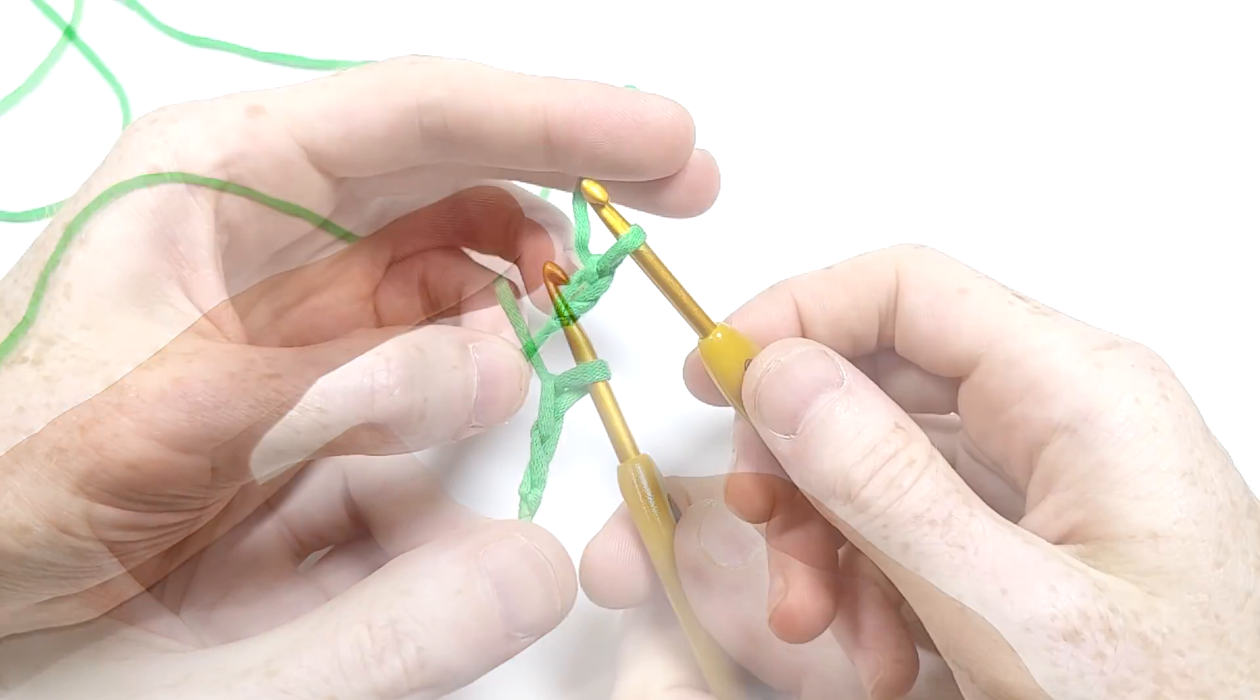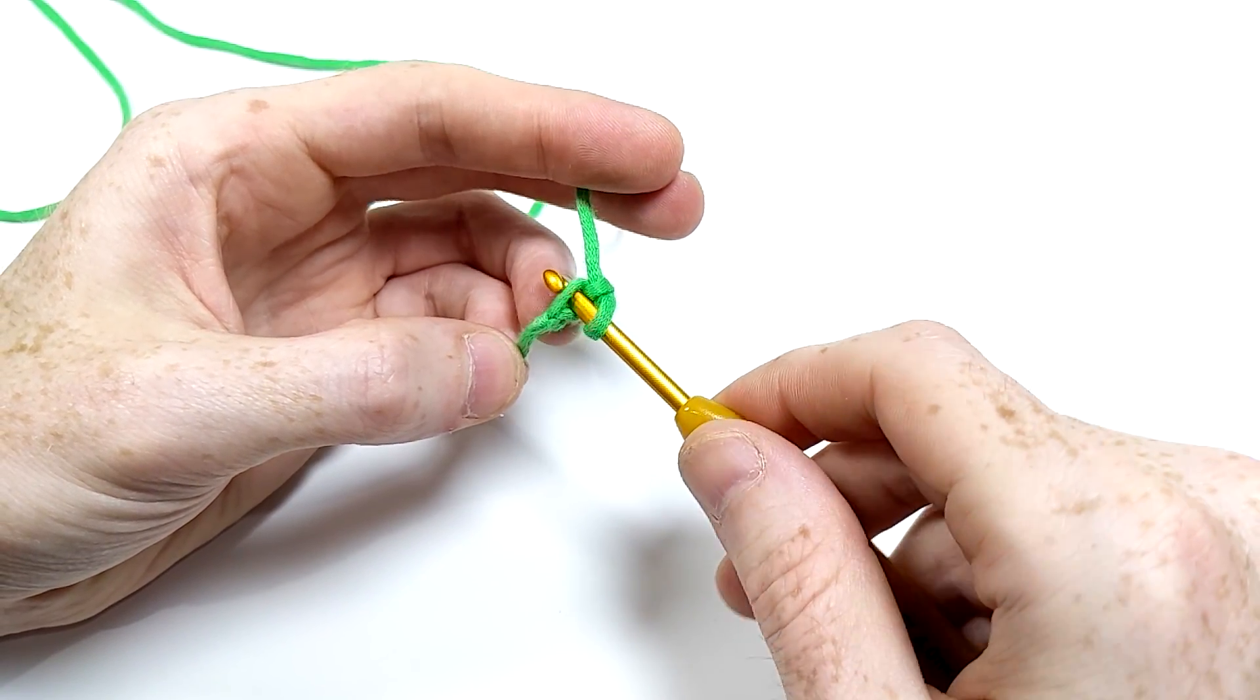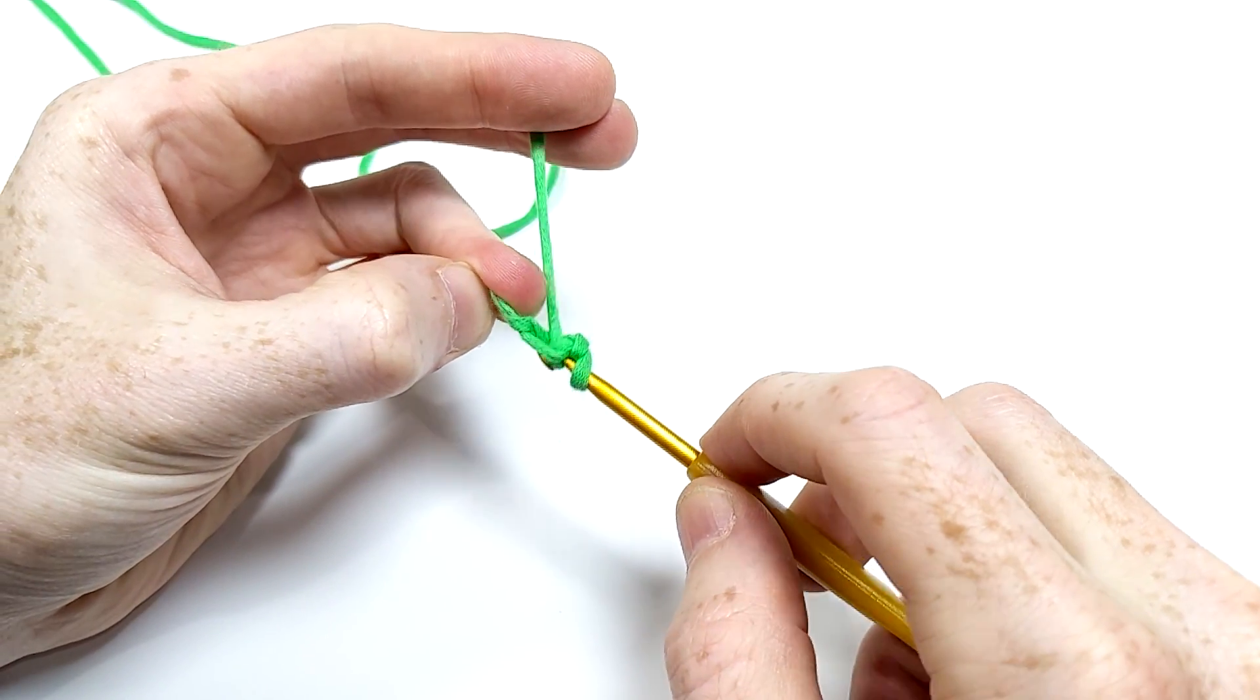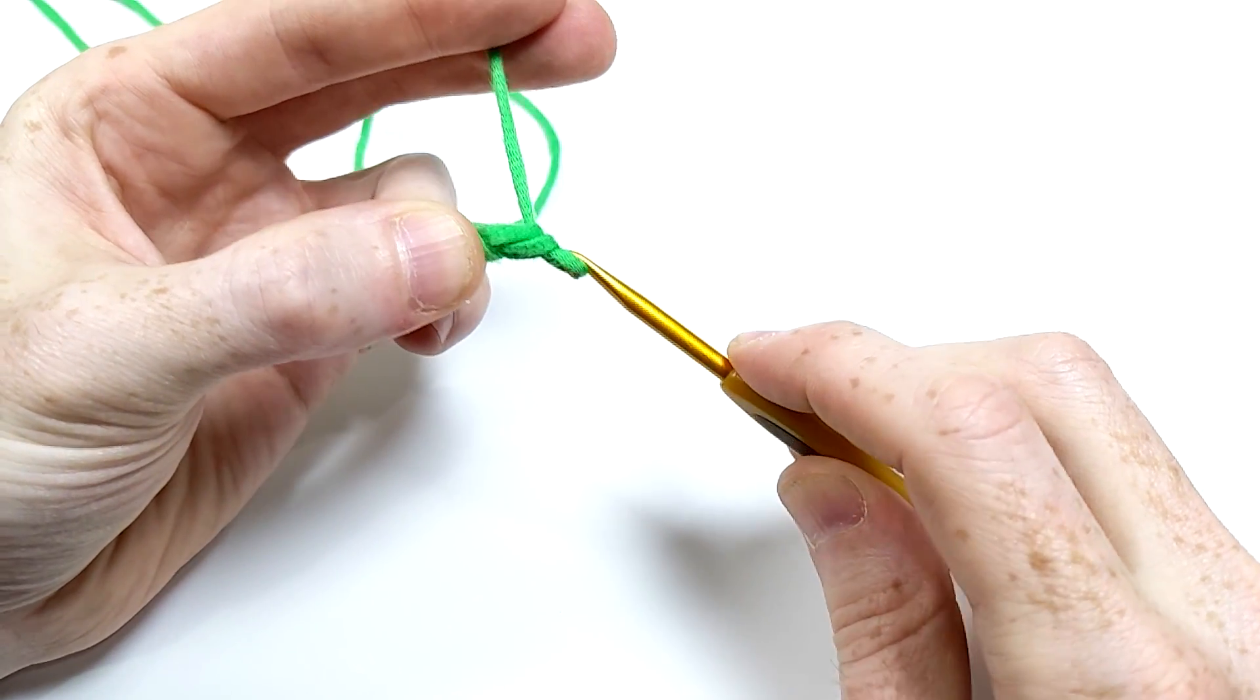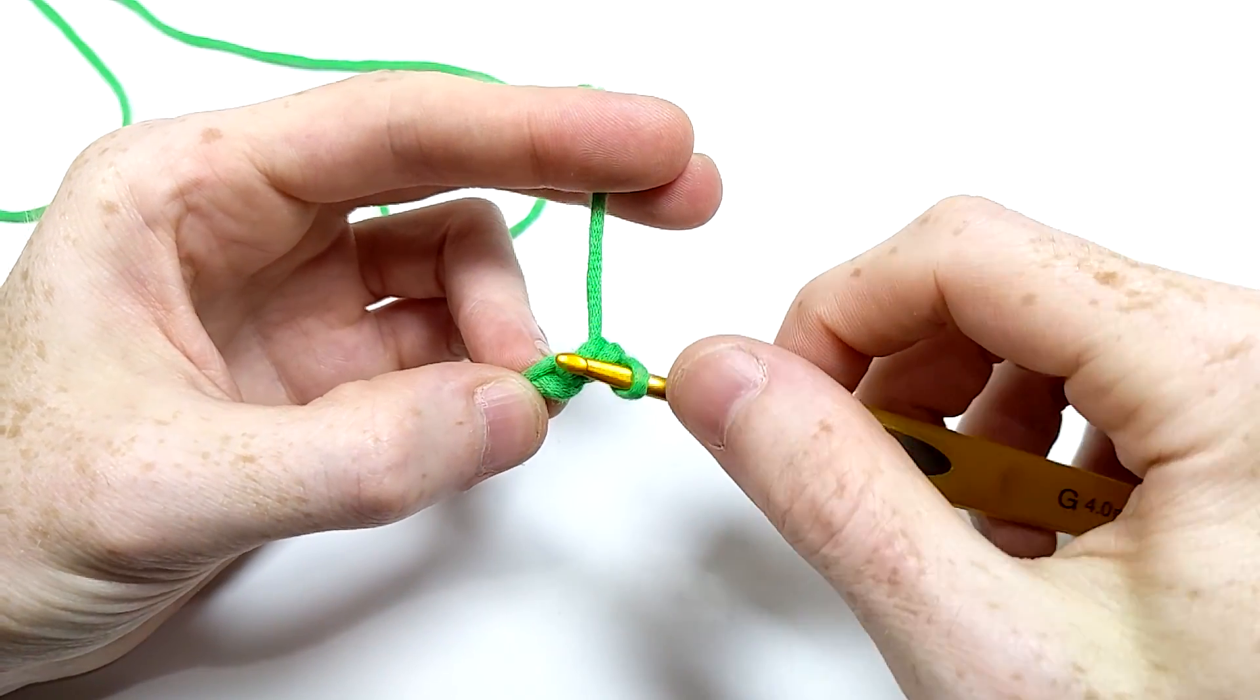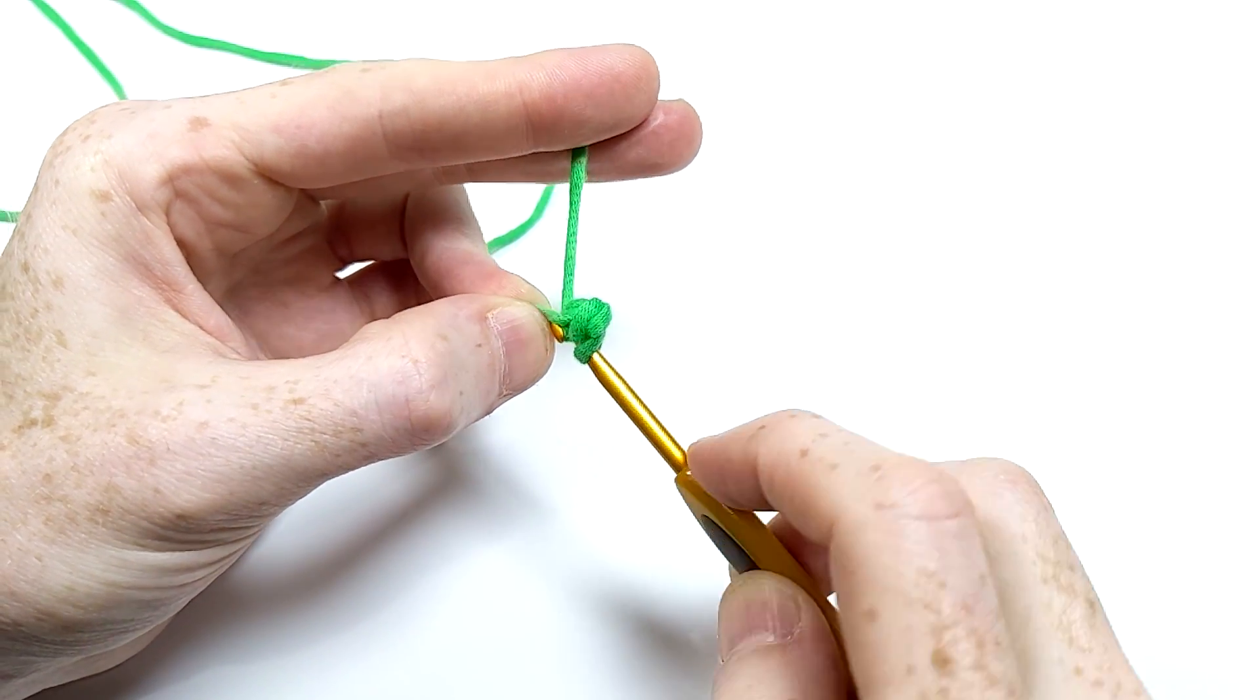Now it's time to do the first real stitch. Find a gap on the chain that you can push the hook through, then hook some yarn and pull it out of just the hole so that you end up with two loops on the hook. All you have to do now is yarn over again and pull through both of the loops. Now you'll have one loop on the hook again. Repeat this five more times through the same gap so that you've gone through it a total of six times.